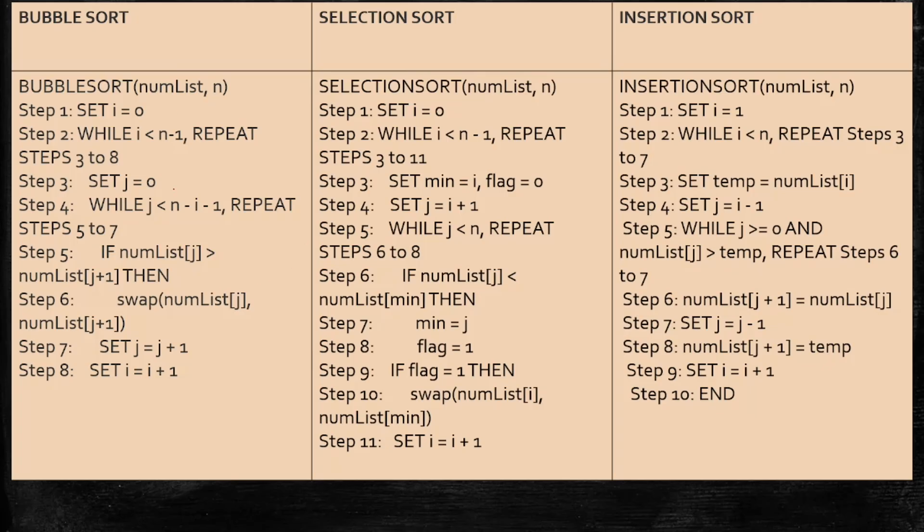Many of my students asked me how can I remember all those three, it is getting confused so much. Just the easiest way, you have to learn the basic concept. In bubble sort, we are having 8 steps. Selection sort, we are having 11 steps. Insertion sort is having step 10 only. Bubble sort, there is nothing extra we are going to add. But selection sort, we are going to add min and flag, these two variables. And insertion sort, we are going to add temp. This pattern you have to remember.